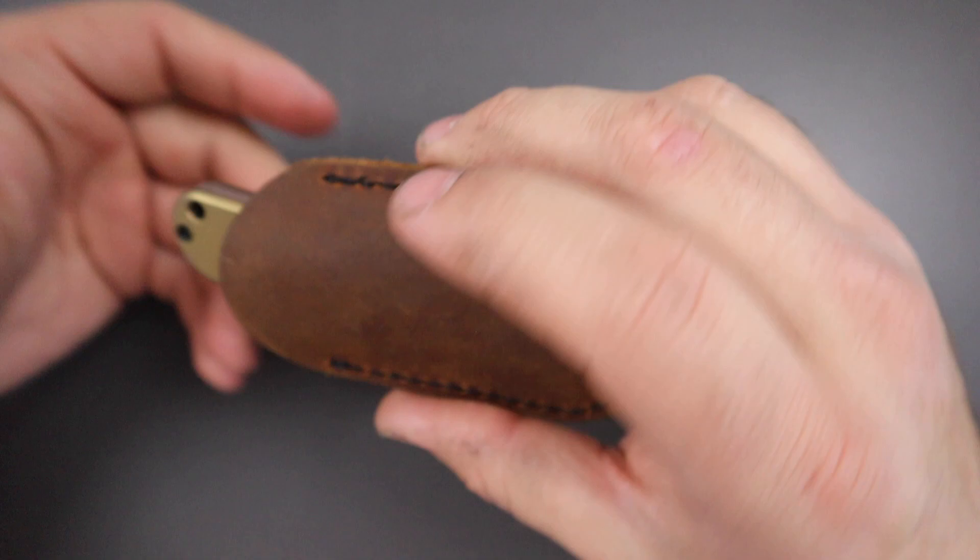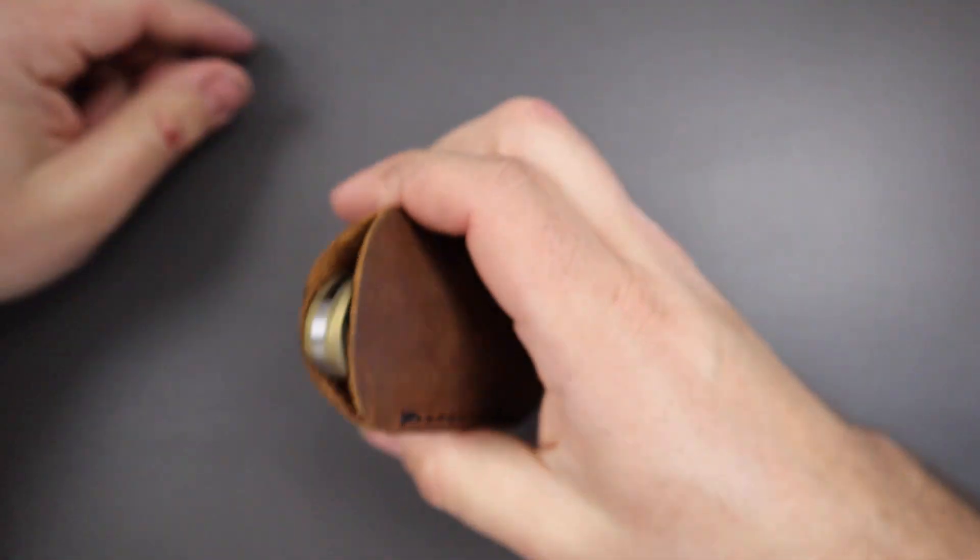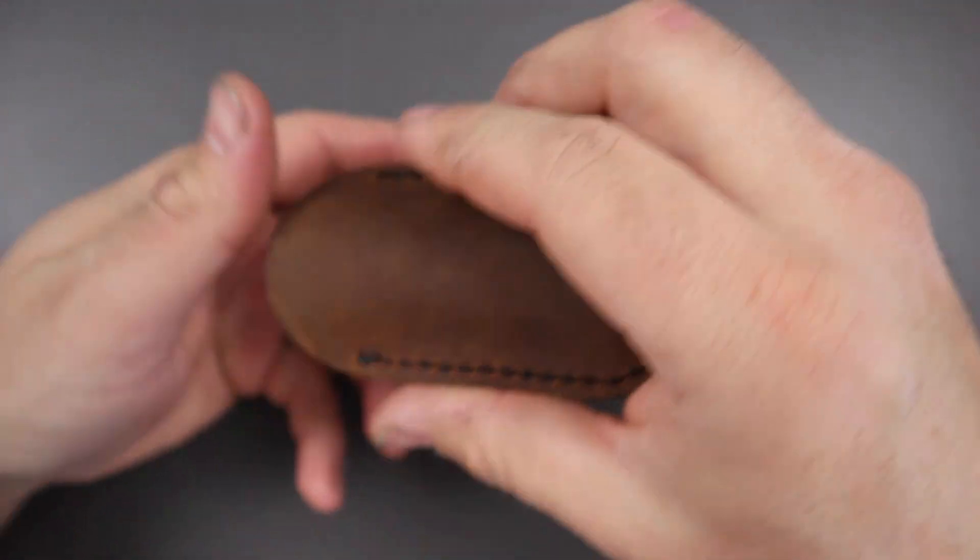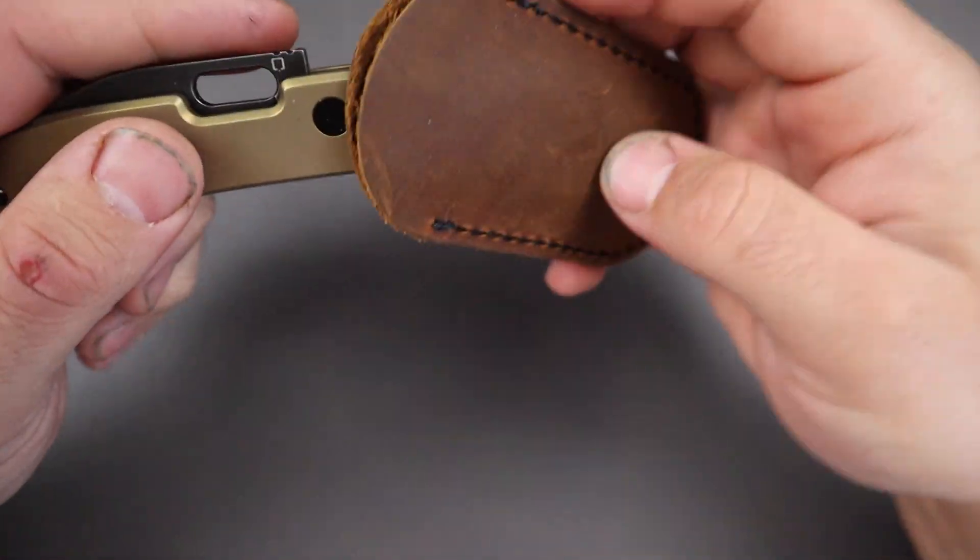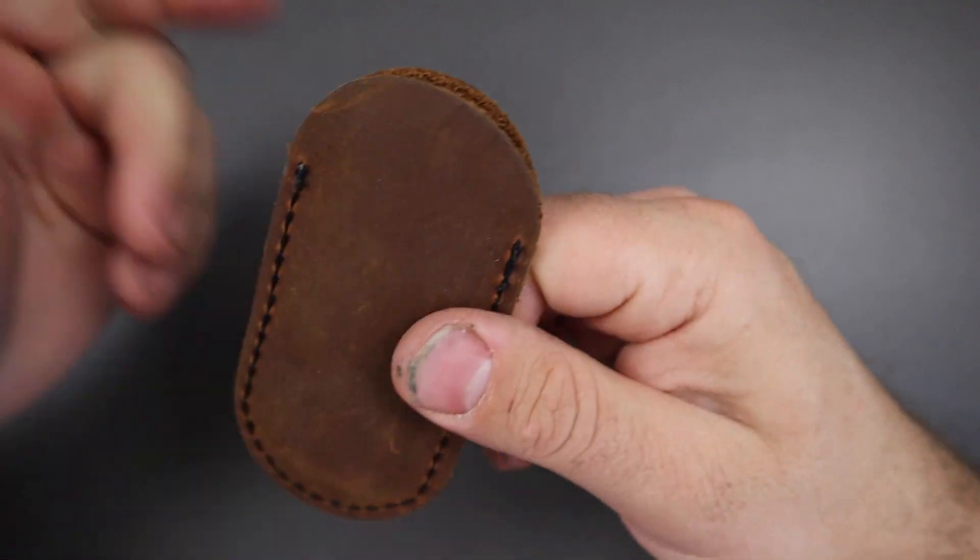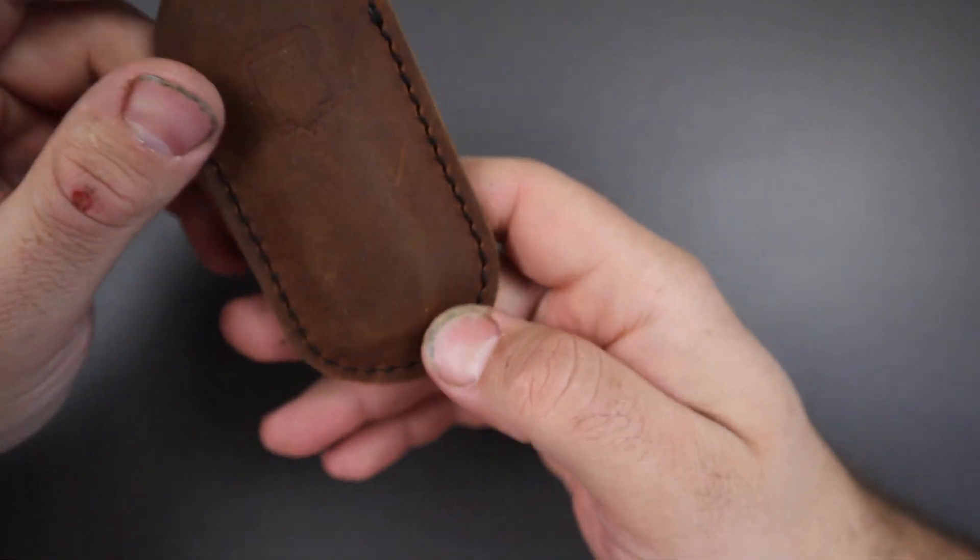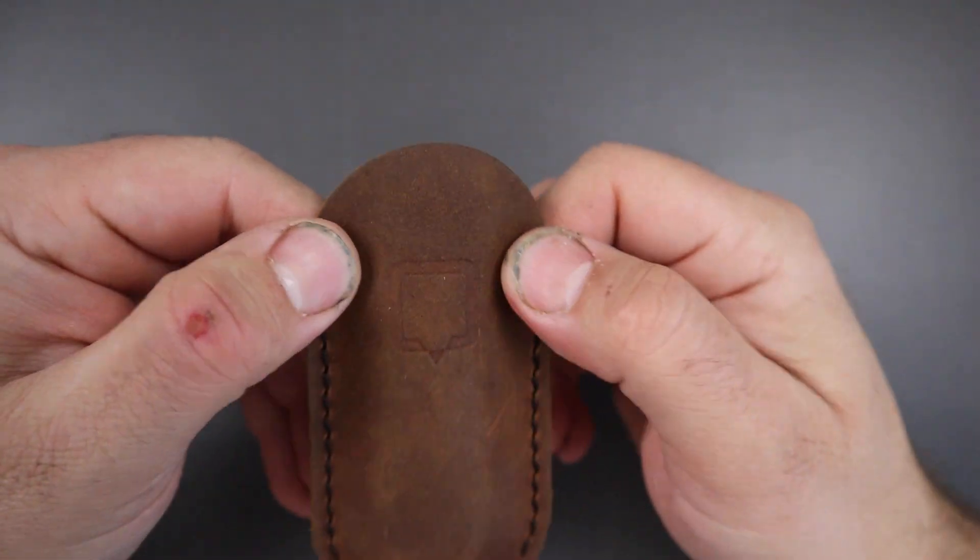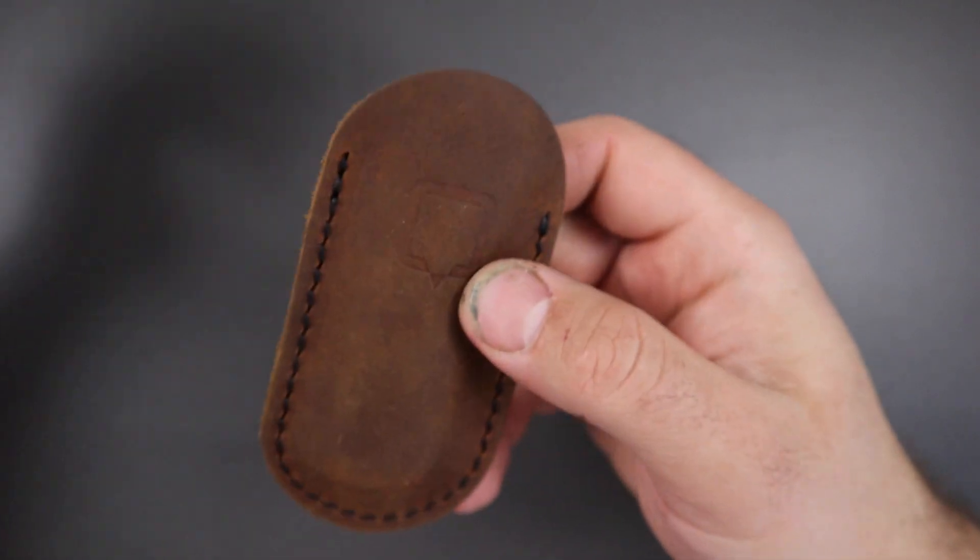Because it is kind of hot dog down a hallway, as they say, on the slip. But it functions fine though, like it's perfectly functional. And it has a nice little Kvist logo embossed on there as well.